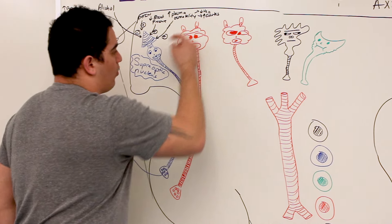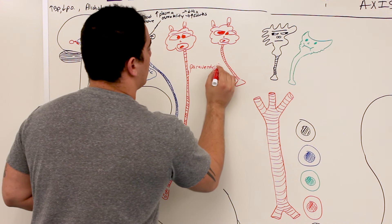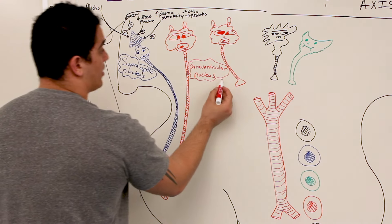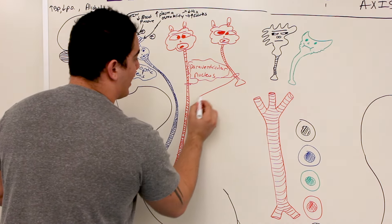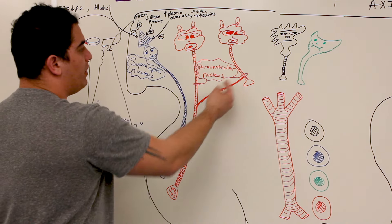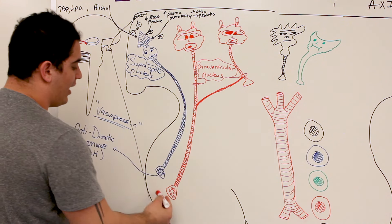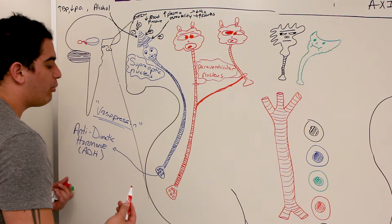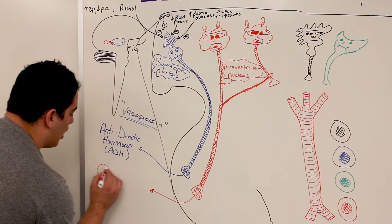Now let's look at another nucleus: the paraventricular nucleus. Both of these structures shown are paraventricular nuclei, and their axons can combine to form a tract. The paraventricular nucleus has axons that extend from the hypothalamus all the way to the posterior pituitary. It releases a specific hormone — just like ADH, it is stored presynthesized in synaptic vesicles at the axon terminal and awaits a stimulus for release. That hormone is called oxytocin.